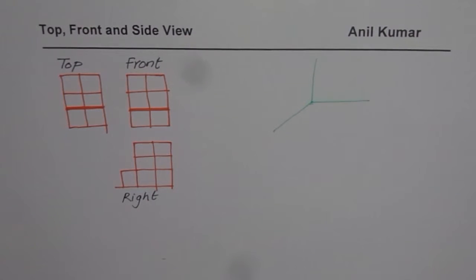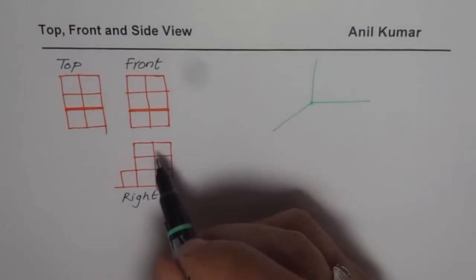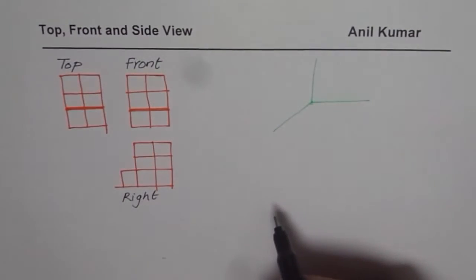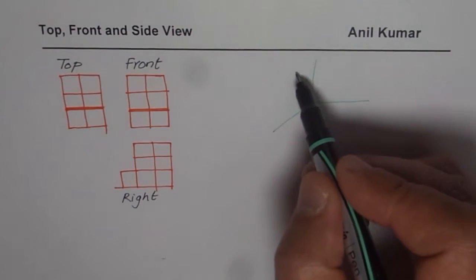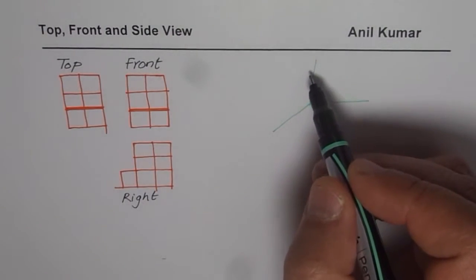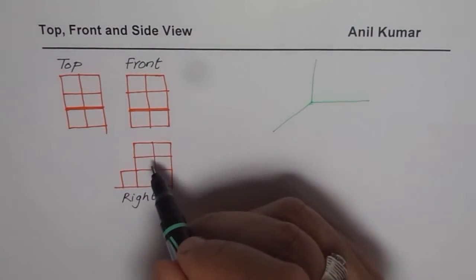Now let's begin. You could start from the side or from top. In this particular case, what we observe here is that the right view is very specific. Right could be along this wall, so let us sketch the right view first.